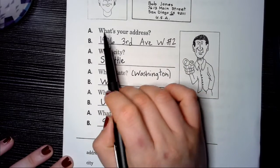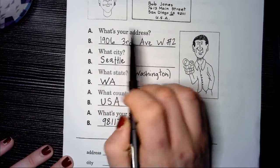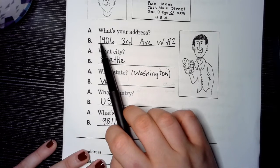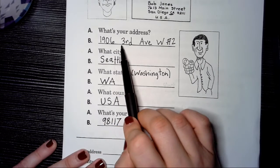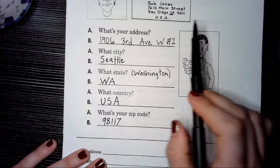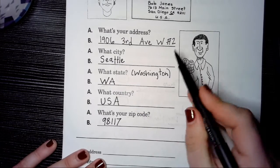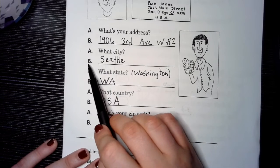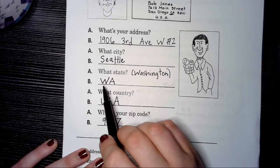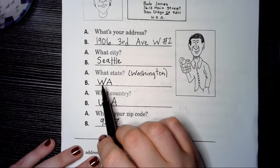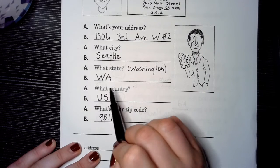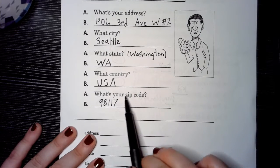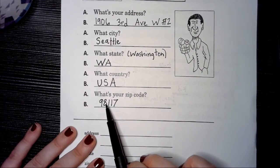We'll read this now. What's your address? This is my address, not yours. 1906 3rd Avenue West, number two. What city? Seattle. What state? Washington. What country? USA. What's your zip code? 98117.